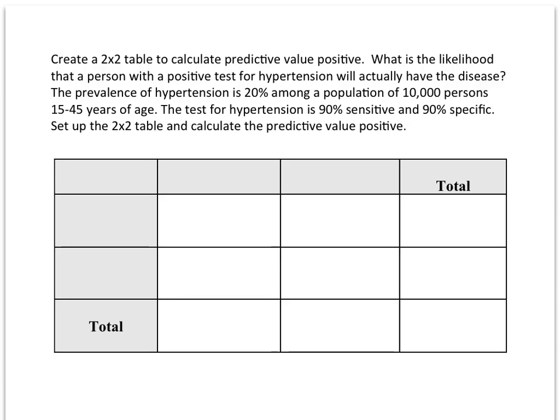We're going to practice the skills of how to create a 2x2 table with basic information and from that calculate the positive predictive value. The example given is what is the likelihood that a person with a positive test for hypertension will actually have the disease.